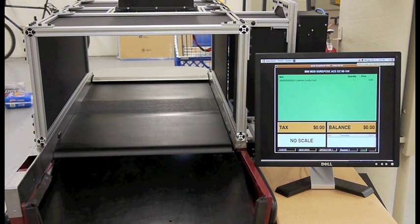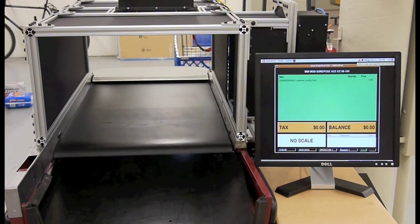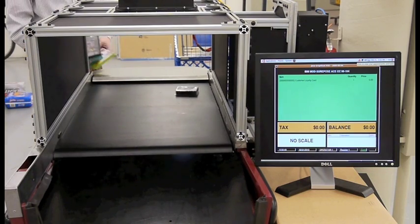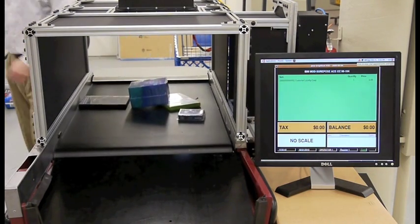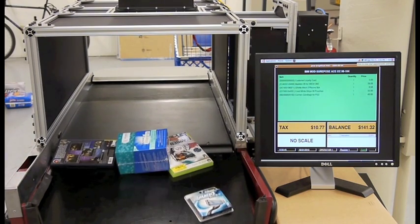Here the point of sale display has been moved to the right side of the screen to show the items being rung up by TunnelHawk. Viper can recognize small items and can easily recognize multiple items at the same time.